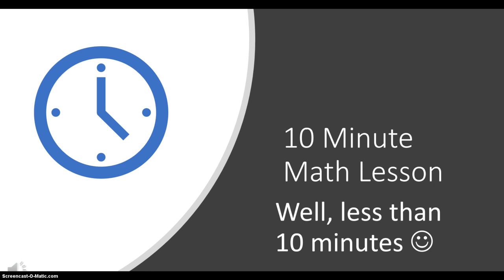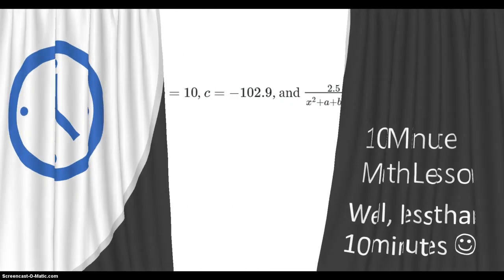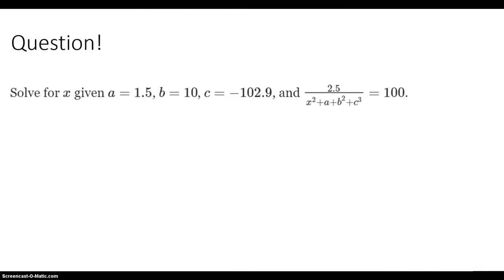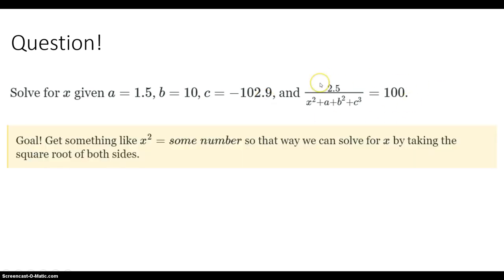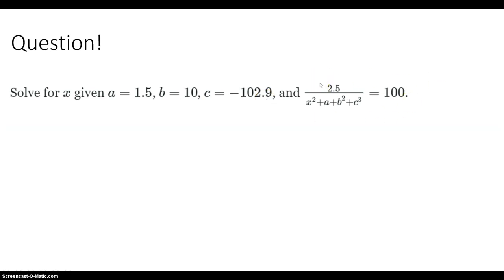All right, let's get to our question: solve for X, given a is 1.5, b is 10, c is minus 102.9, and we're given some equation. So you see there's an x-squared term in this equation.